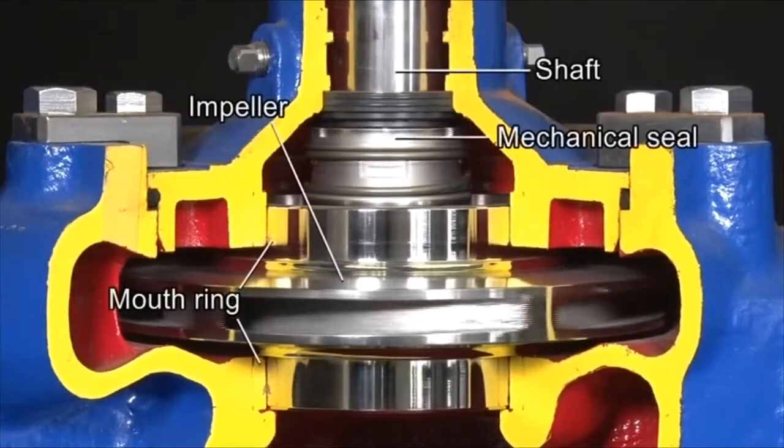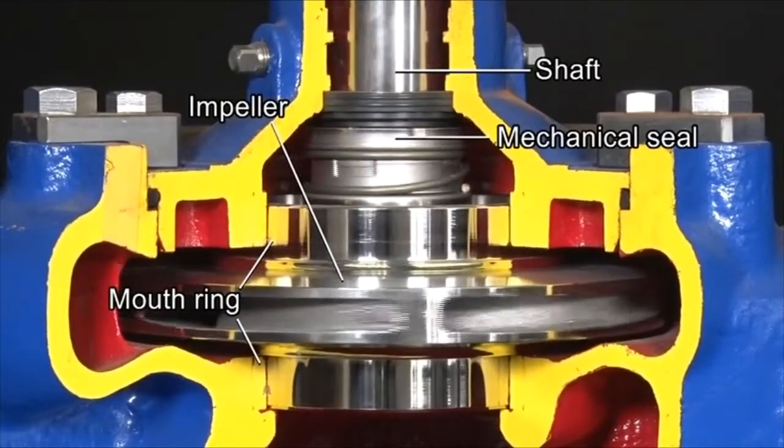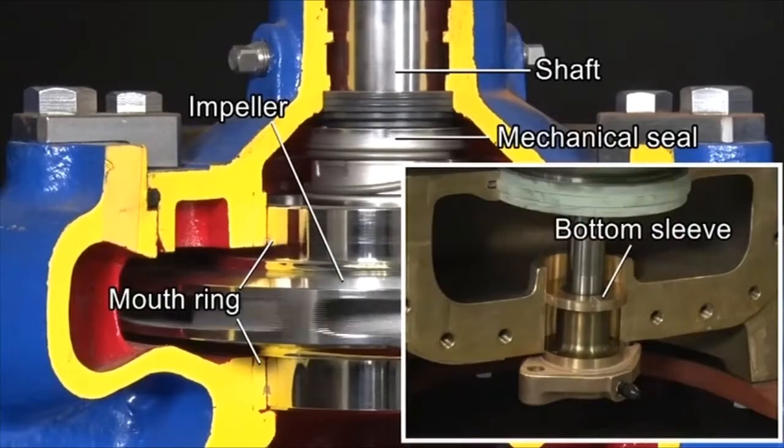Shown here are the main components of the volute pump: the shaft, mechanical seal, impeller, and mouth ring. Some vertical shaft pumps have a bottom sleeve.